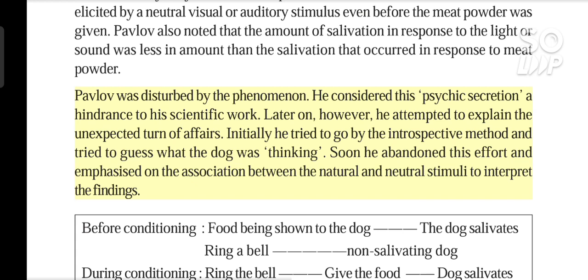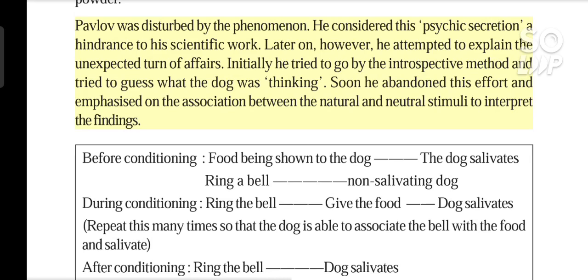Pavlov was disturbed by the phenomenon. He considered this 'psychic secretion' a hindrance to his scientific work. Later on, however, he attempted to explain the unexpected turn of affairs. Initially he tried to go by the introspective method and tried to guess what the dog was thinking. Soon he abandoned this effort and emphasized on the association between the natural and neutral stimuli to interpret the findings.